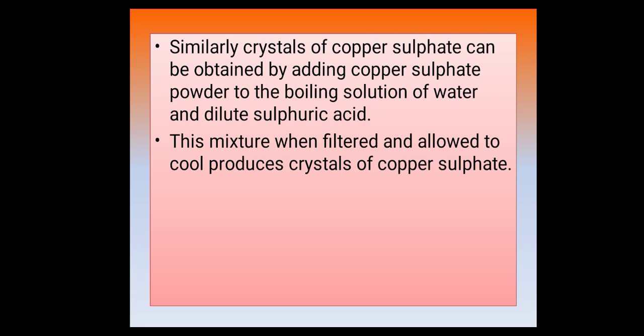Similarly, if we need crystals of copper sulfate, we use the crystallization process. It can be obtained by adding copper sulfate powder to a boiling water solution to which dilute sulfuric acid has been added. This mixture is then filtered and allowed to cool. As it cools, crystals of copper sulfate become visible. Crystals of copper sulfate can be obtained by adding copper sulfate powder to a boiling solution of water and dilute sulfuric acid, then filtering and allowing to cool.